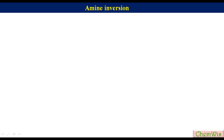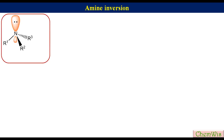The topic of today's discussion is amine inversion. Amines have a pyramidal structure with a lone pair in an sp3 hybrid orbital. If all three groups attached to the nitrogen are different, the amine becomes chiral. The chiral amine may be secondary or tertiary. Quaternary amines may also be chiral if all four groups attached to the nitrogen are different — that will be discussed later.